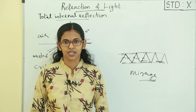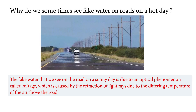That is the mirage. Why do we sometimes see fake water on roads on a hot day? The fake water that we see on the road on a sunny day is due to an optical phenomenon called mirage, which is caused by the refraction of light rays due to the differing temperature of the air above the road.